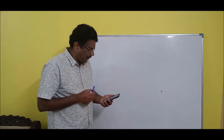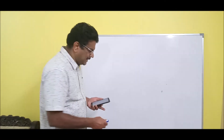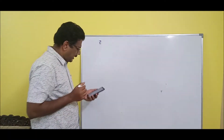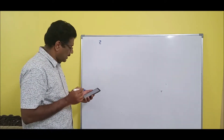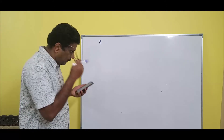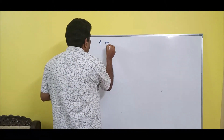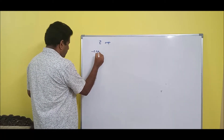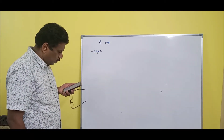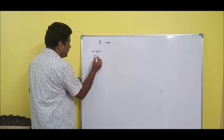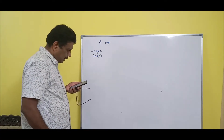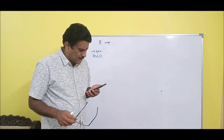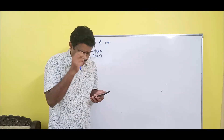Let us do one simple problem. Find the electric field intensity at the origin due to a minus 0.8 micro-coulomb charge located at (18, 2, 3) in free space. Also calculate its direction and magnitude.